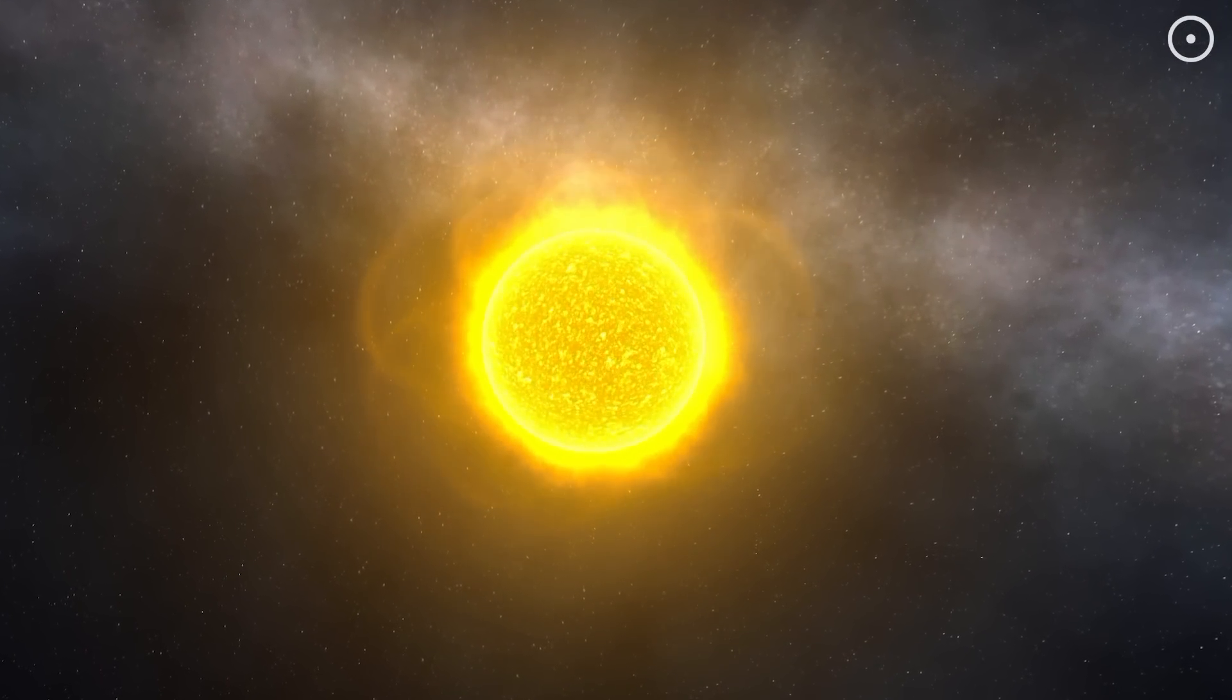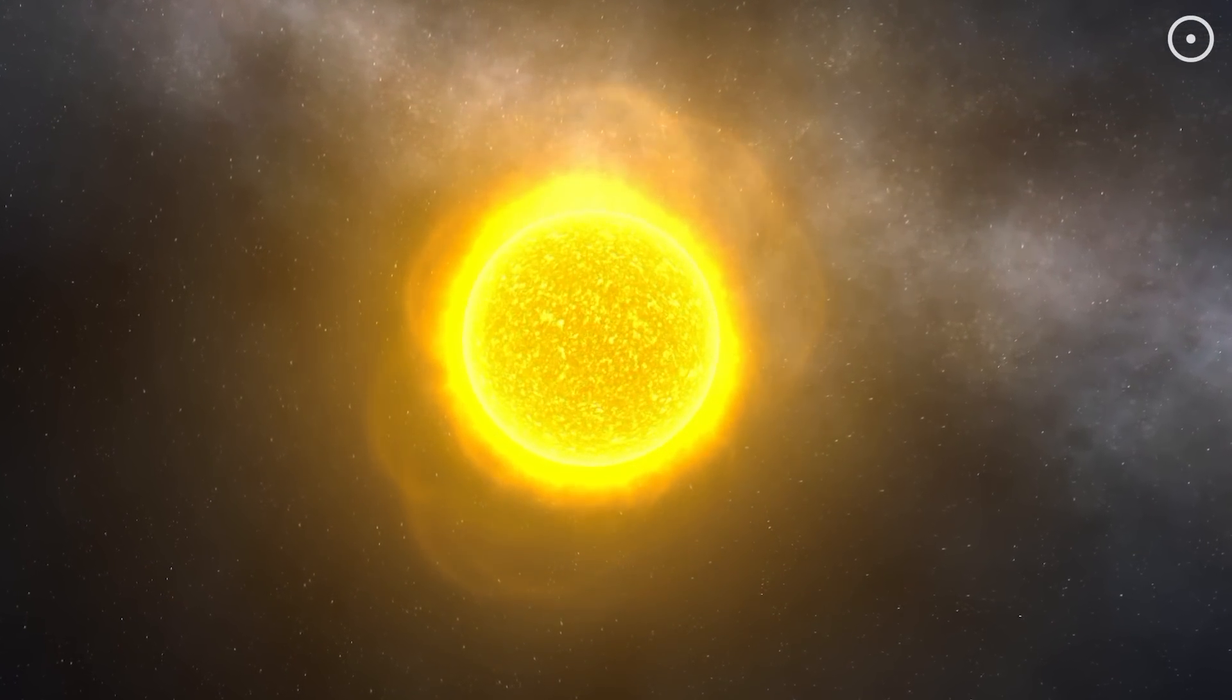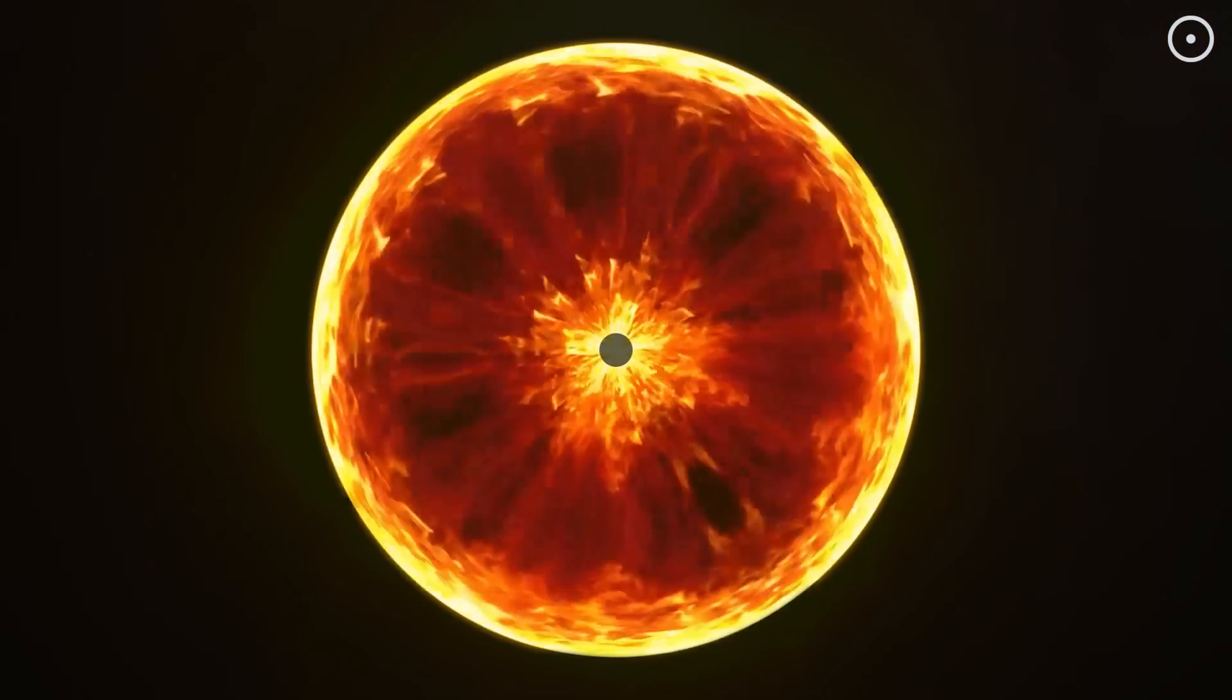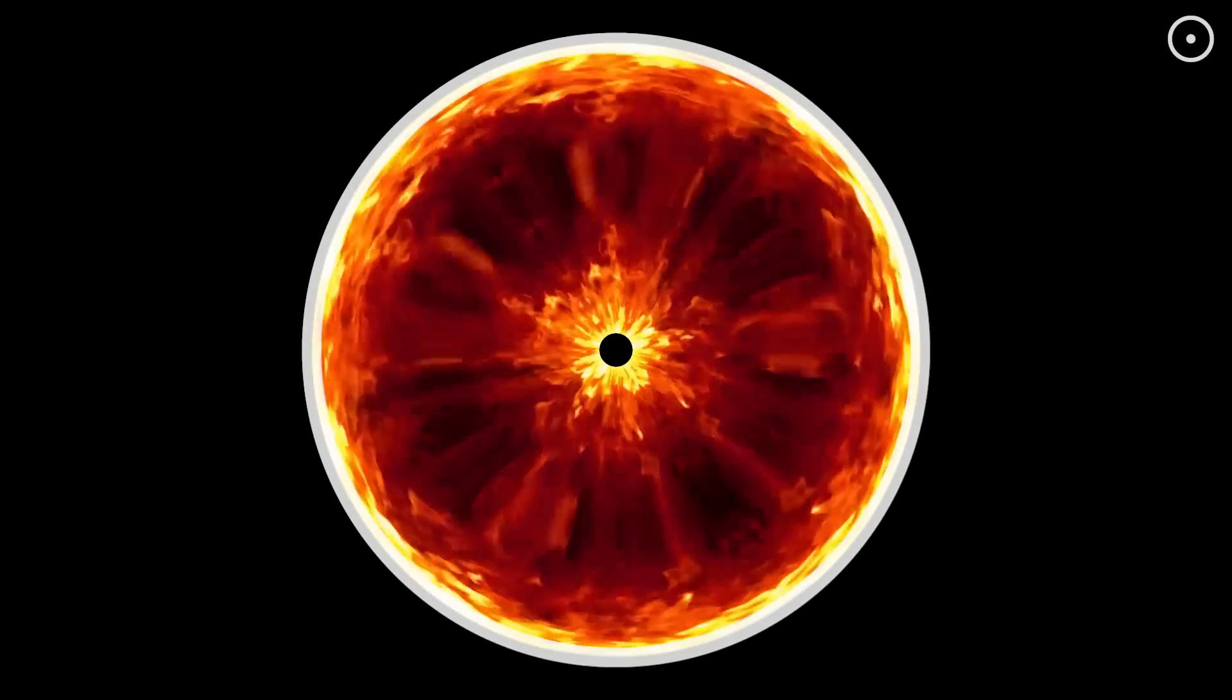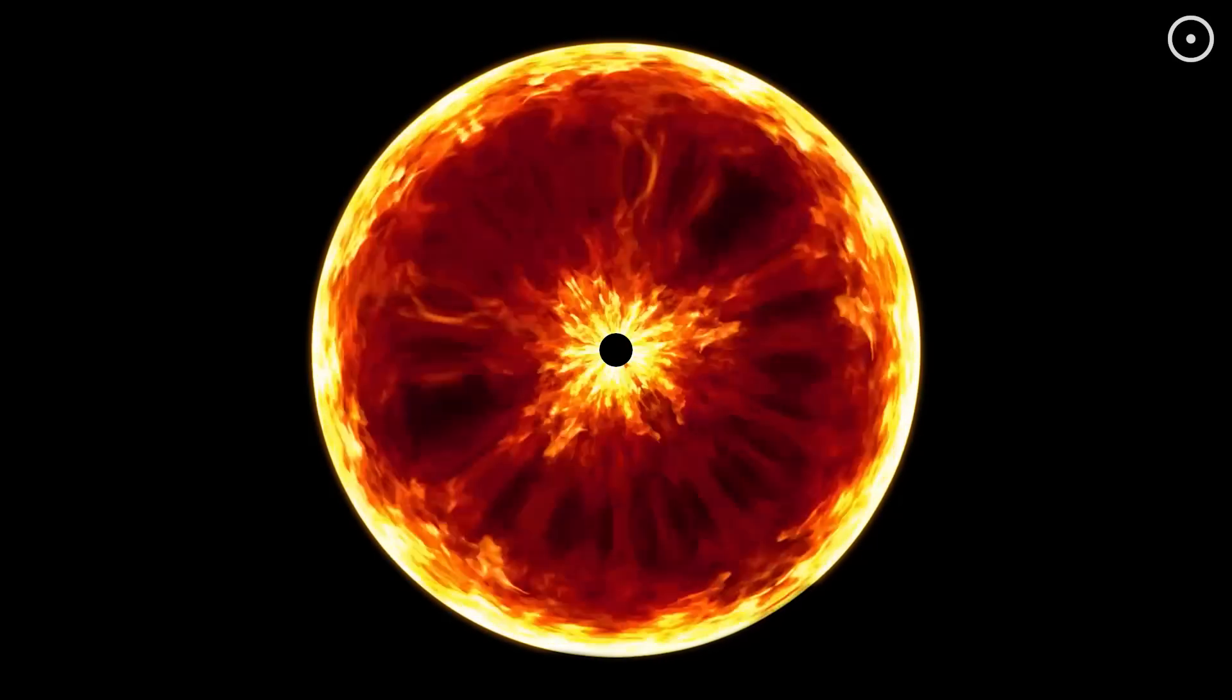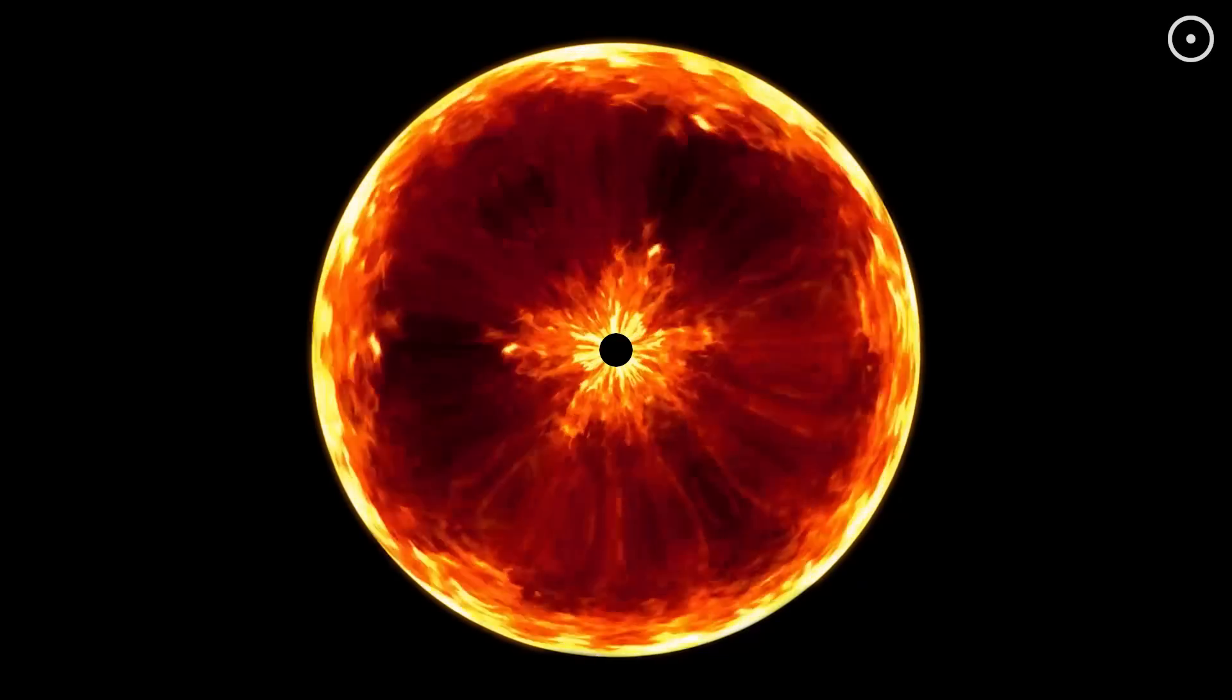The black hole continuously feeds on the star's material, and the energy released from this process is what keeps the outer layers from collapsing entirely. Think of it like this: a quasi-star is a massive glowing bubble of gas with a black hole at its heart. The black hole acts like an engine, powering the star and keeping it stable despite its enormous size.